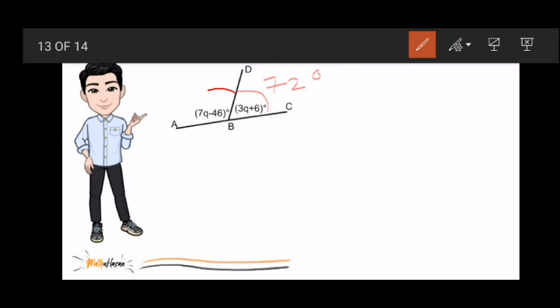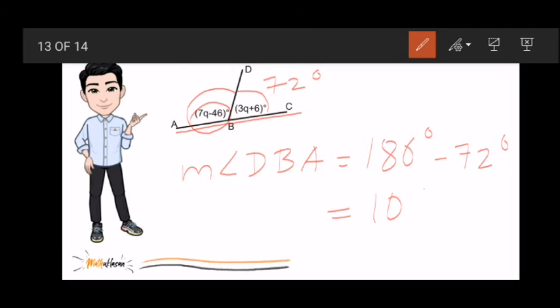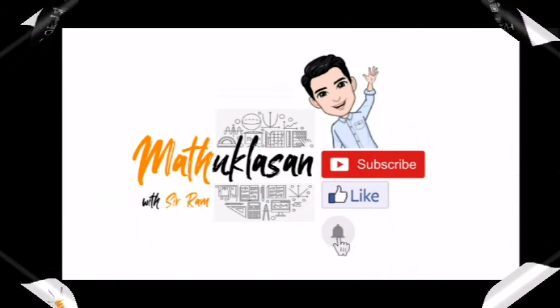But what if I will ask you to find the value of angle DBA? There are two ways to do that. The first solution is for you to substitute Q, which is 22, on this given. But the easier way is to use the properties for supplementary angles. We all know that angle ABC is a straight angle. So, we can definitely measure or get the measure of angle DBA by subtracting 72 from 180 degrees. So, therefore, the other angle is 108 degrees. And that's all for this video.